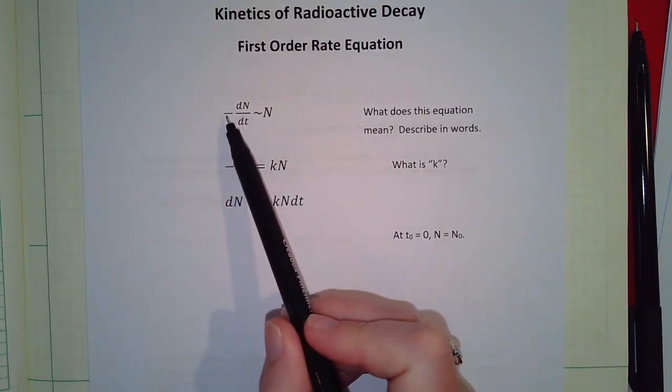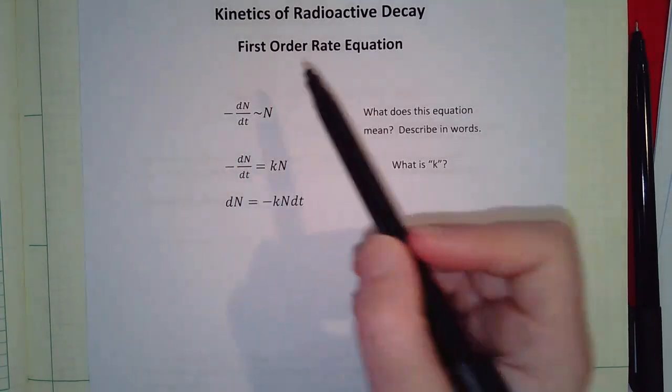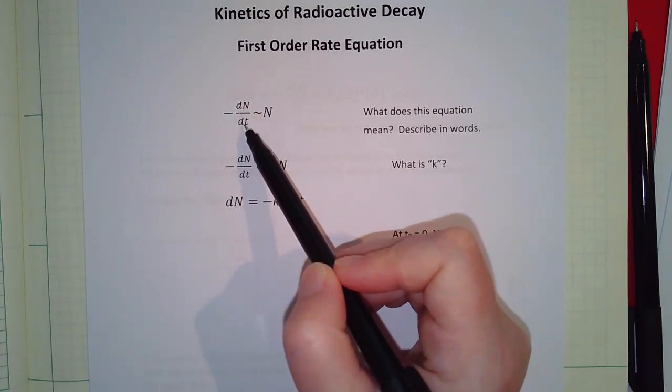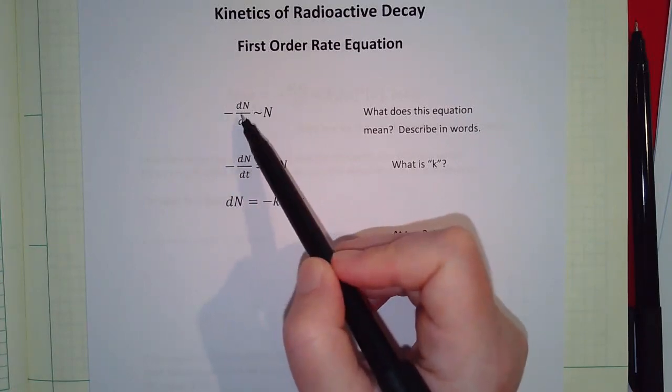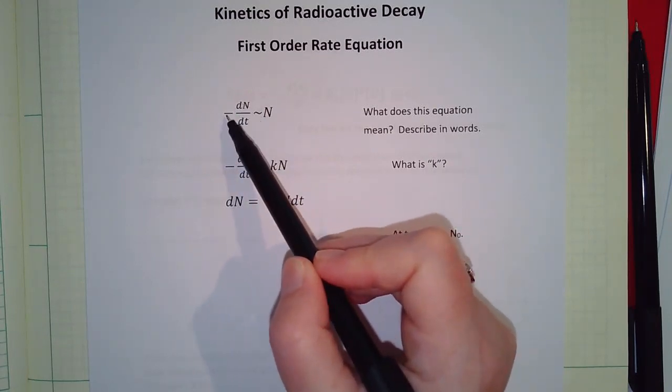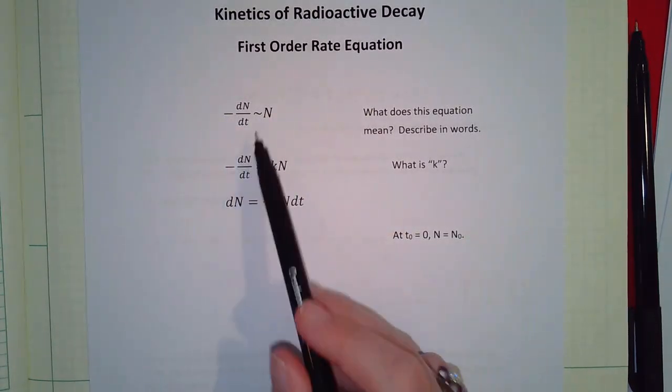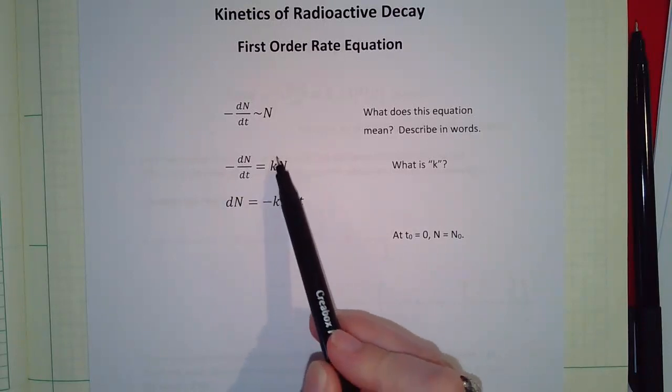So what does minus dN/dt mean actually? We've got our number of atoms and it's decreasing with time. And because rates are always expressed as a positive quantity, because this term is decreasing with time we need the negative sign. So that's the proportionality and here's the rate law and we need our constant of proportionality or our rate constant which is k, the rate constant.